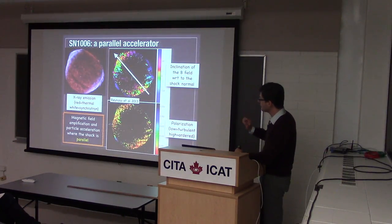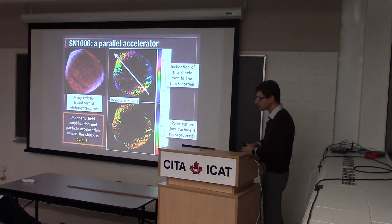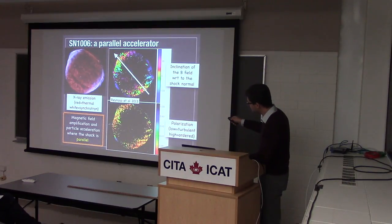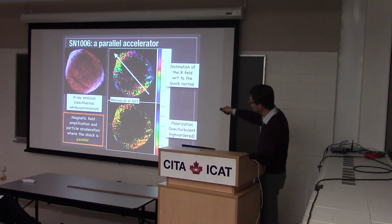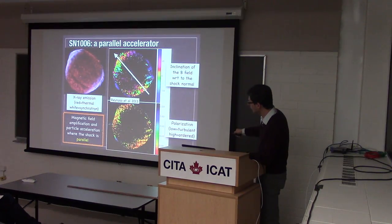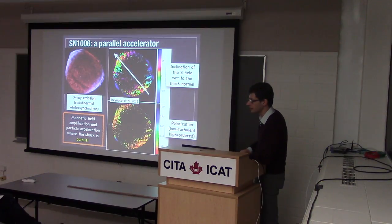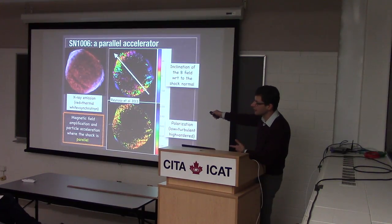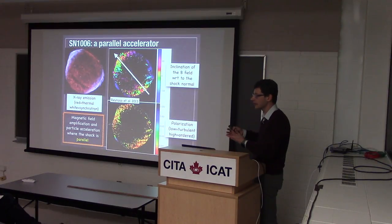There have been measurements of radio polarization in this remnant. They show an overall indication that the magnetic field is on average aligned with the shock normal, which is consistent with the quasi-parallel picture. However, there is also measurement of the degree of polarization, and in these regions there is a low degree of polarization — suggesting turbulent magnetic fields, which would create lower polarization even in a quasi-parallel shock.